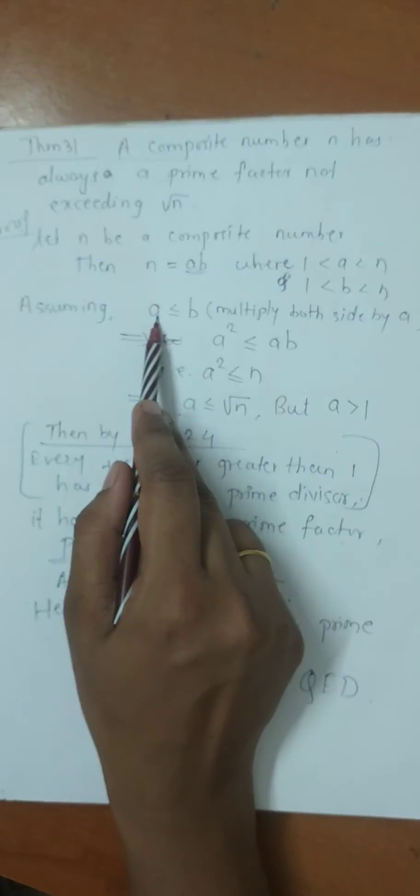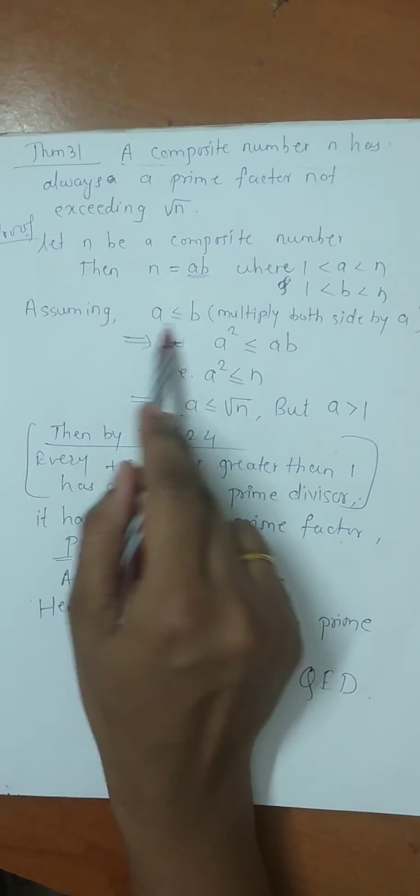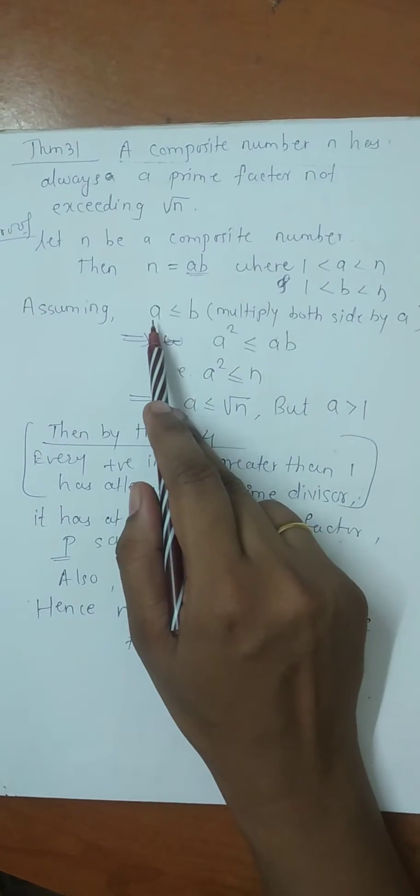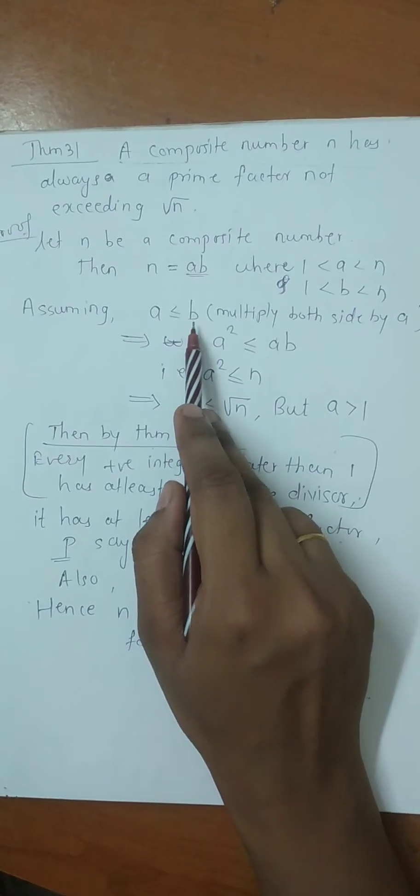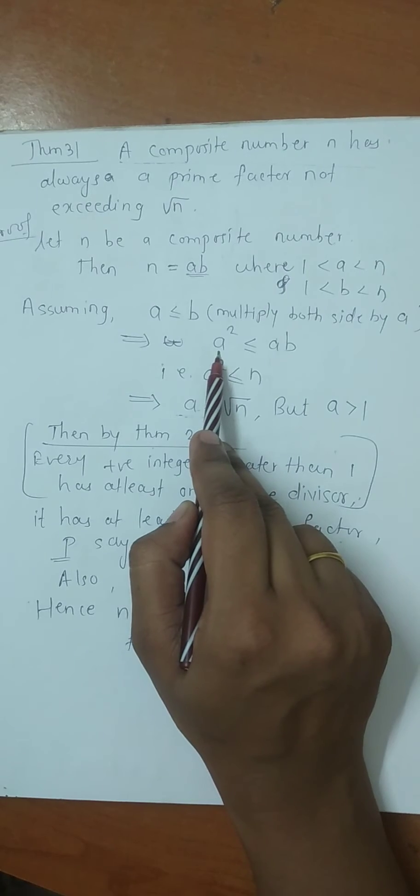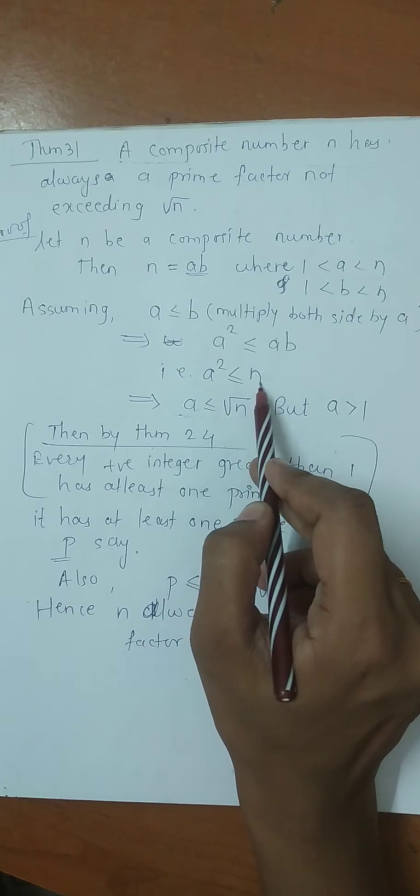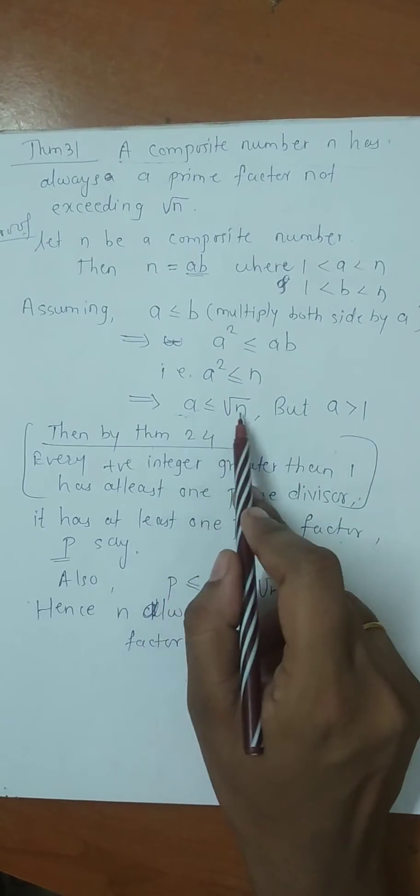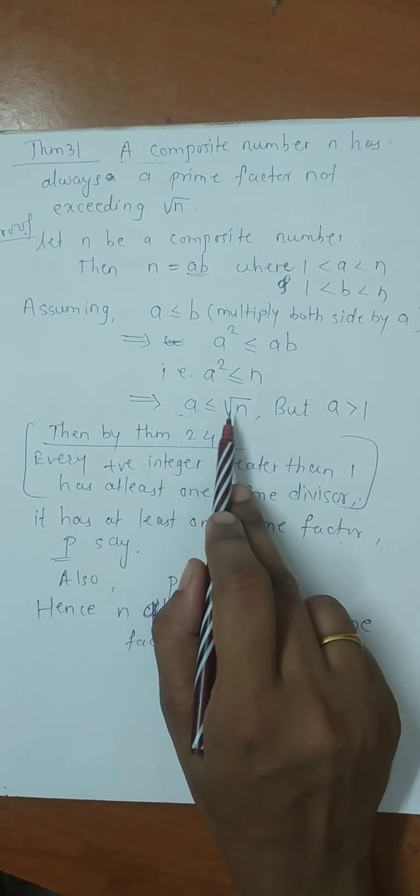Assuming a is less than or equal to b. Yes. What is the inequality we have given? We are assuming inequality a is less than or equal to b. So multiply both sides by a. So you will get a square is less than or equal to ab. And what is our ab? ab is n. That is a square is less than or equal to n. Taking square root on both sides, you will get a is less than or equal to root n.